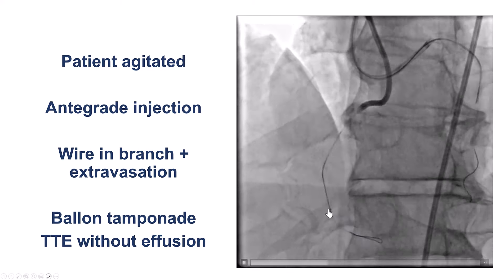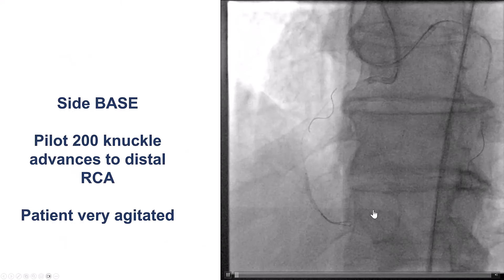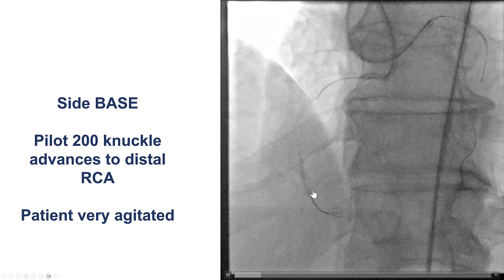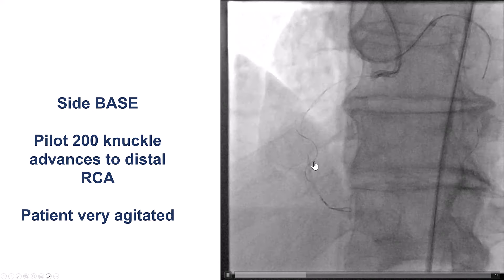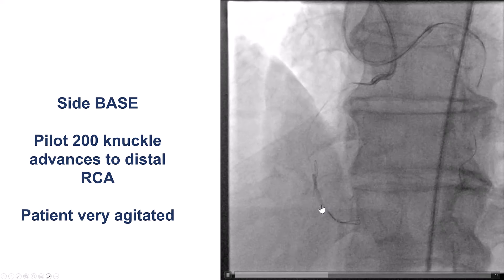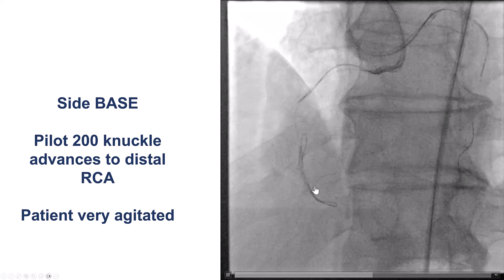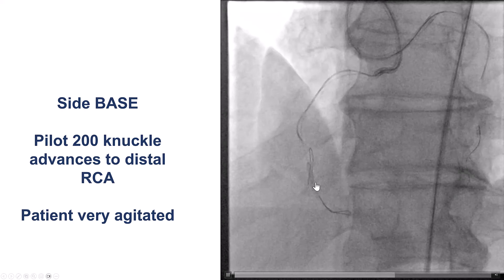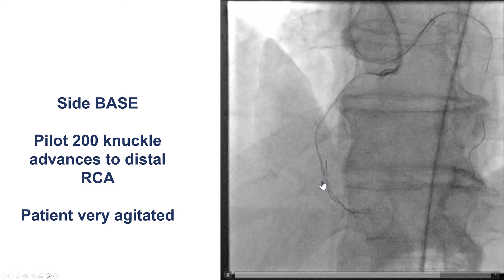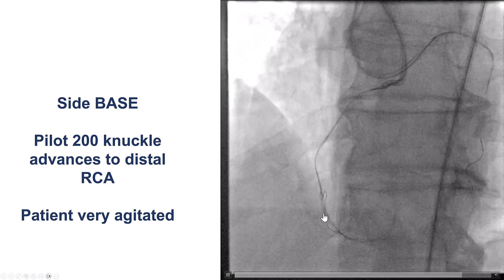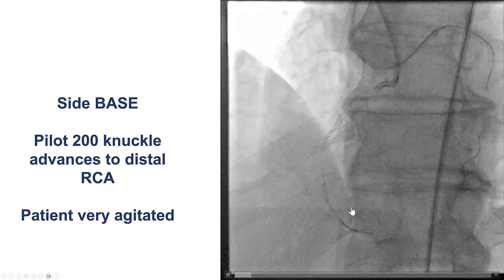We inserted a small balloon and did an echo that did not show a pericardial effusion. Then to avoid getting into this branch, we used the side-BASE technique with a balloon halfway in the distal RCA and halfway into that acute marginal branch. After doing that and using a Pilot 200 guidewire, the wire was able to knuckle and eventually cross in a different plane going towards the distal RCA.